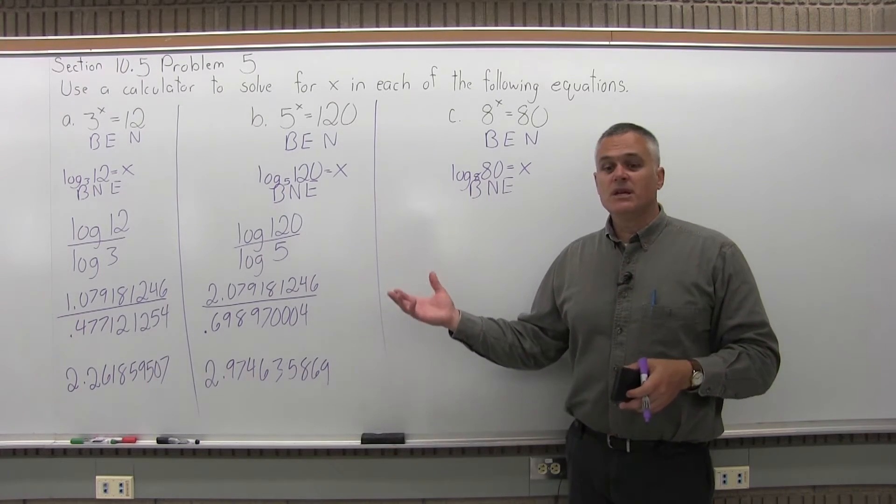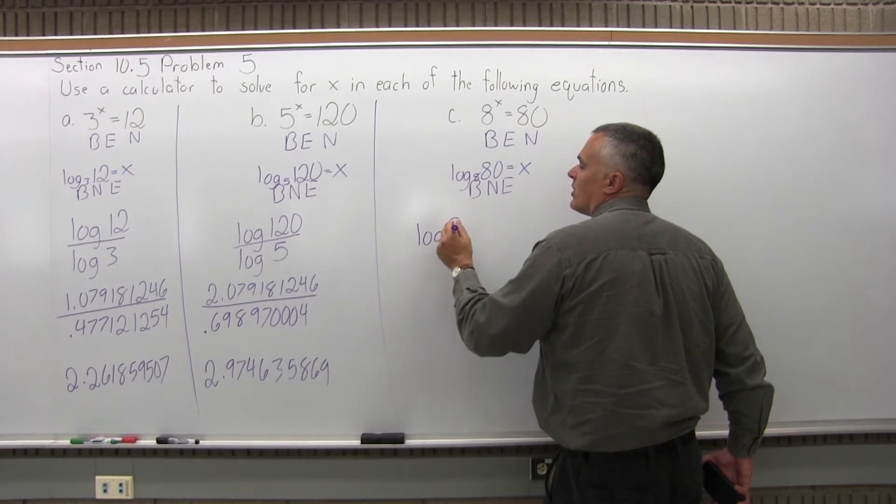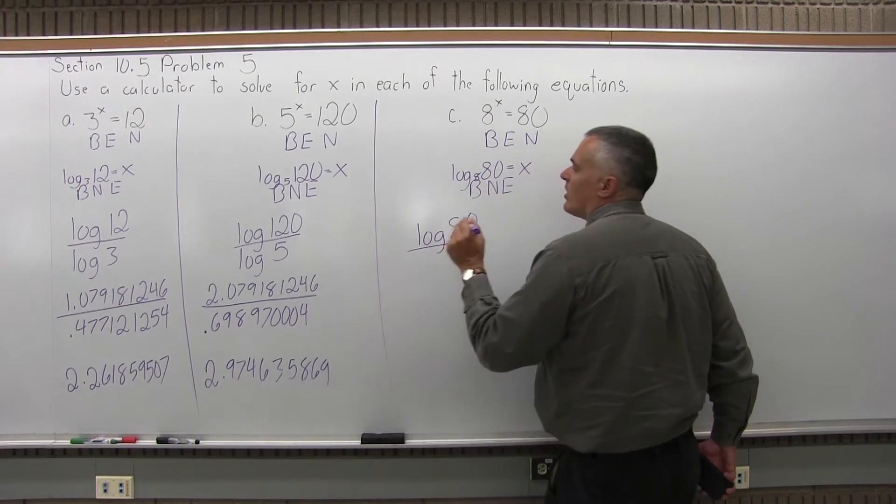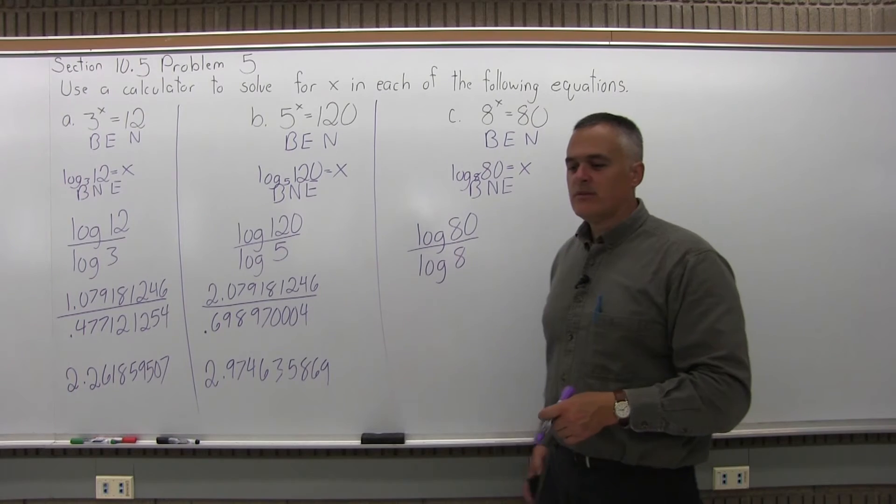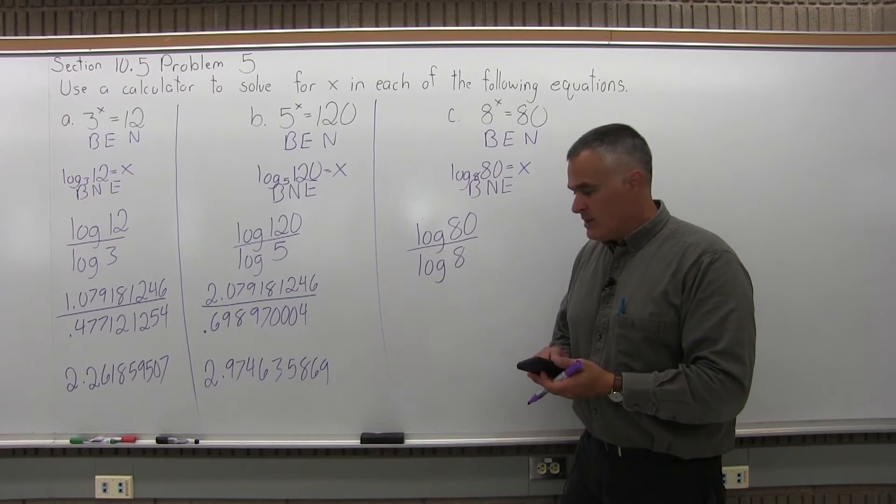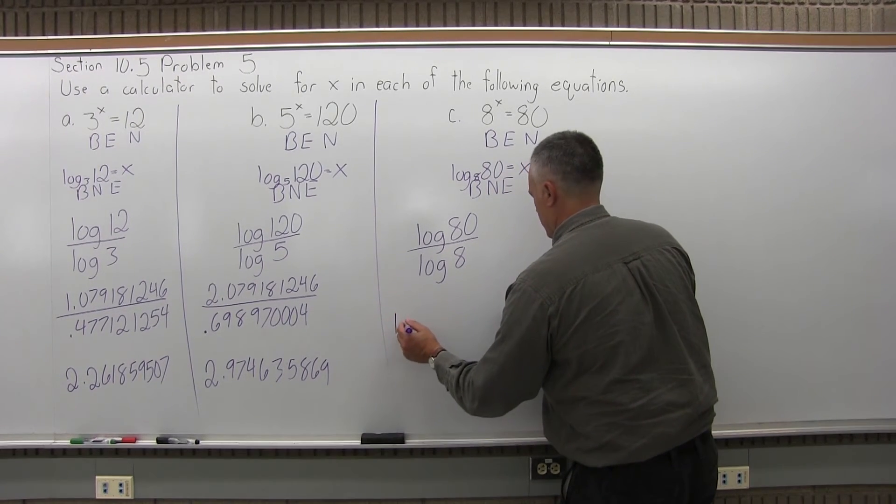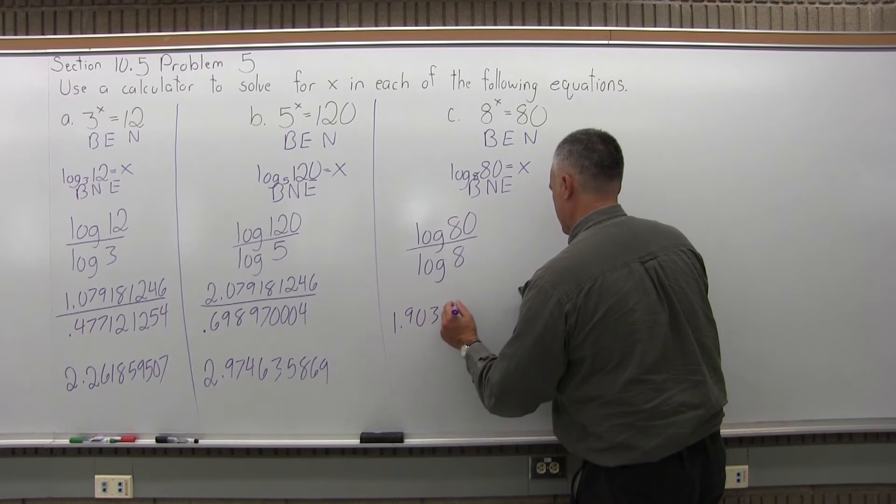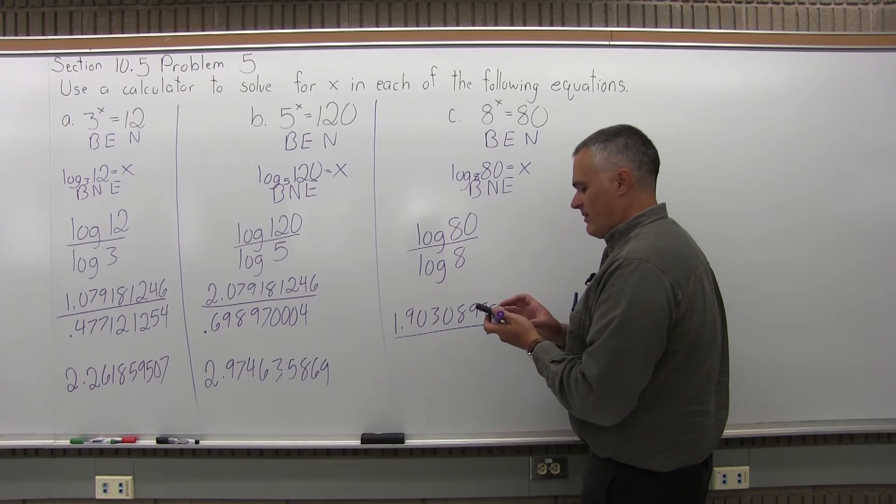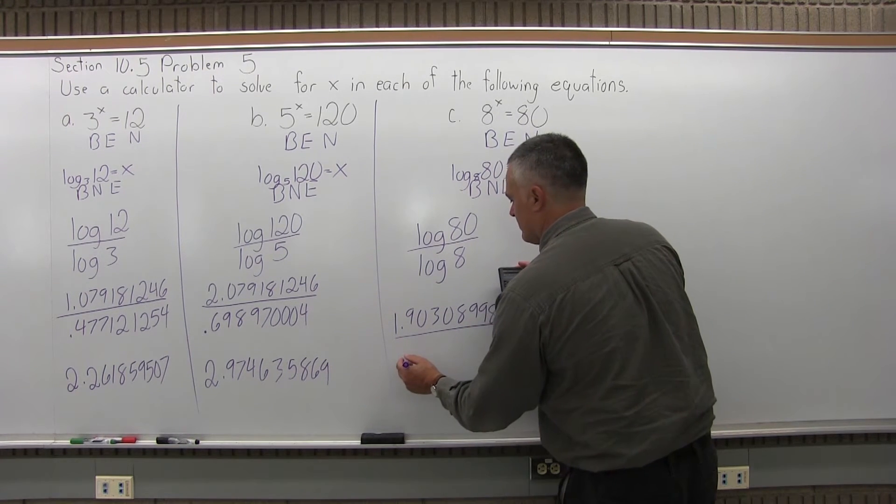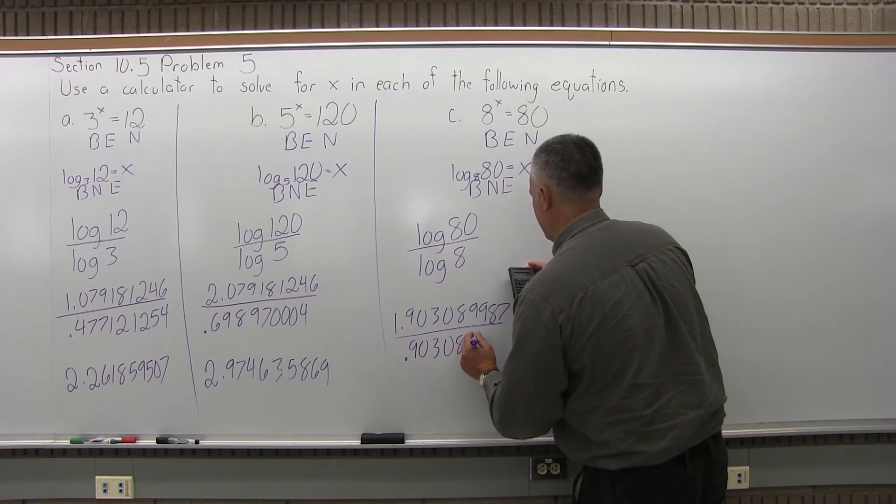So like parts A and B, I'm going to use that change of base formula, and I'll do common log of the number, so common log of 80, over common log of the base, common log of 8. And the calculator will do all the hard work for me. So I'll clear the screen. The common log of 80 in the numerator is 1.903089987. And in the denominator, the common log of 8 is 0.903089987.